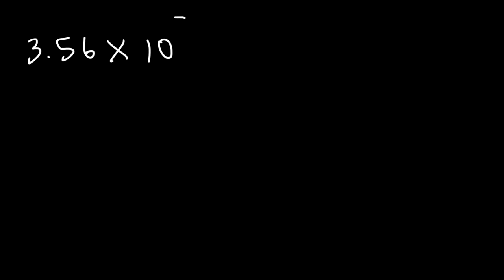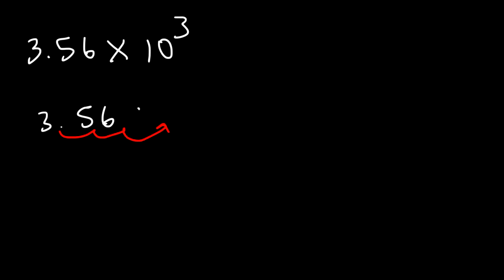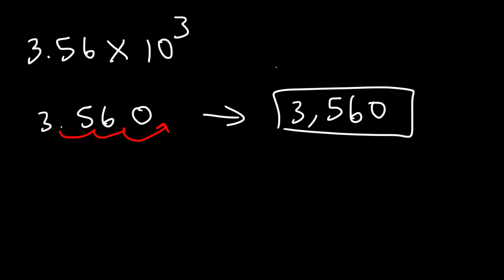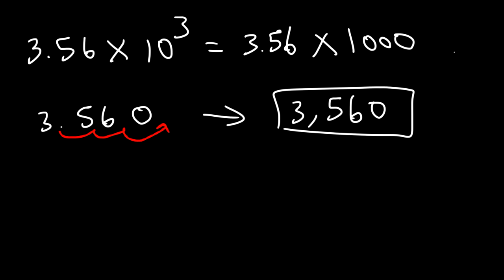Let's try 3.56 times 10 to the 3rd power. We need to move the decimal 3 units to the right, so we add a zero to get 3,560. Think of it as 3.56 times 1,000 — which is 3,560.